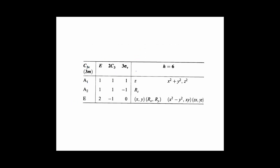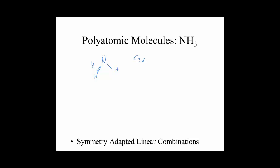We can look at the character table for C3v. We know the S orbital is going to have A1 symmetry because it's the most symmetric. But we need to ask ourselves, which S? There's a nitrogen with a 2s valence orbital and three hydrogens each with 1s valence orbitals. The simple rules we were using to get symmetry from the character table on linear molecules only apply to the central atom, because the coordinate system goes through the central atom.